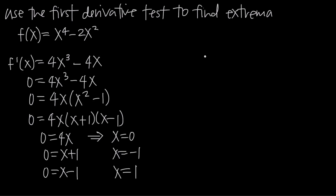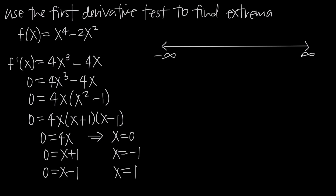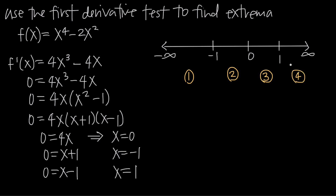Here's what the first derivative test looks like. Once we get these potential critical point values, we set up a simple number line from negative infinity to positive infinity, and graph the three values: -1, 0, and 1. Plotting these three potential critical points divides the entire number line into four intervals: negative infinity to -1, -1 to 0, 0 to 1, and 1 to positive infinity.